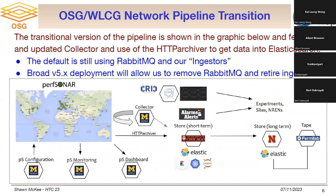This is what the pipeline looks like. It's a transitional pipeline because we still have a collector component running, while an HTTP archiver allows the toolkits to directly write. There are many components here that are part of the infrastructure that manages, configures, and monitors things, and eventually gets data into Elasticsearch so we can actually look at the data.